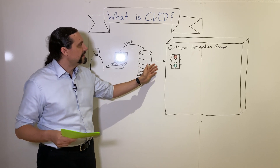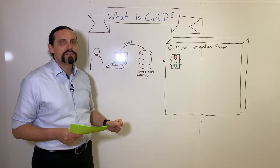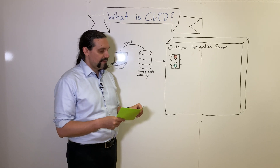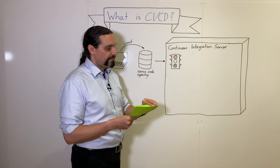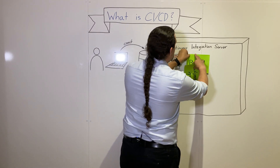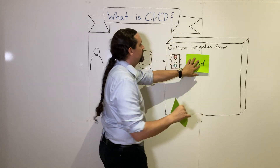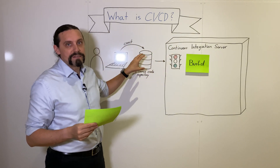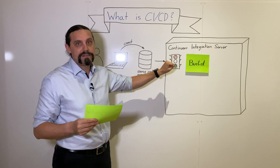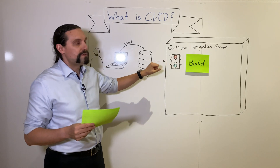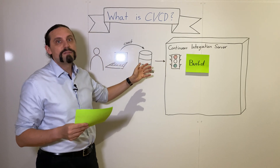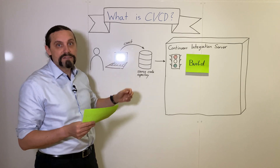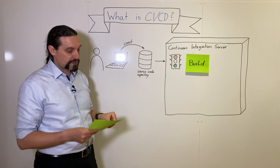Immediately, the continuous integration server starts up and begins to build the software. It integrates the software with the rest of the codebase so that the developer knows if his code compiles with the rest of the code.